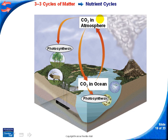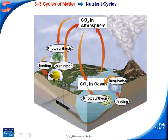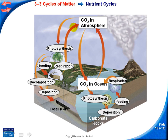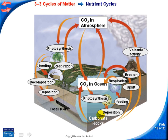Here's the full carbon cycle. Carbon dioxide from the atmosphere is taken into a plant through photosynthesis. The carbon is then passed on through feeding to an animal, which breathes out carbon dioxide back into the atmosphere. Animals die, putting carbon into the ground as fossil fuel. Carbon can then be released through uplift, erosion, and volcanic activity — geochemical processes — as well as through human activity burning fossil fuels.